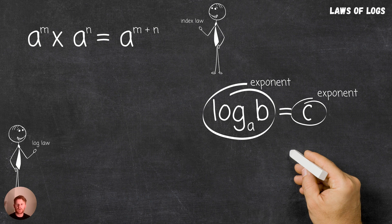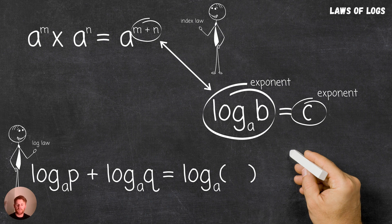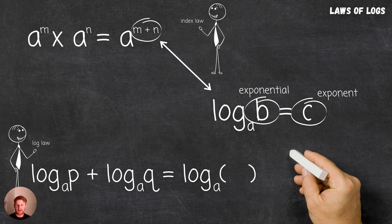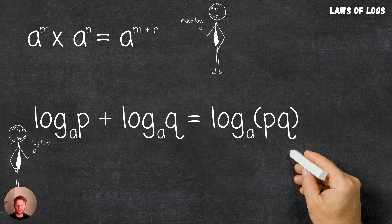Comparing the index law to log notation: in the index law we're adding exponents, so given that logs are exponents, we start by adding logs to give log base a of p plus log base a of q equals log base a of some exponential. Remember, the number that we take a log of is an exponential, and here we have a product of two exponentials, so on the right hand side we have the product of the exponentials p and q. So there you have the first log law: the sum of two logs of equal base and exponentials p and q equals the log of the product of the exponentials p and q.